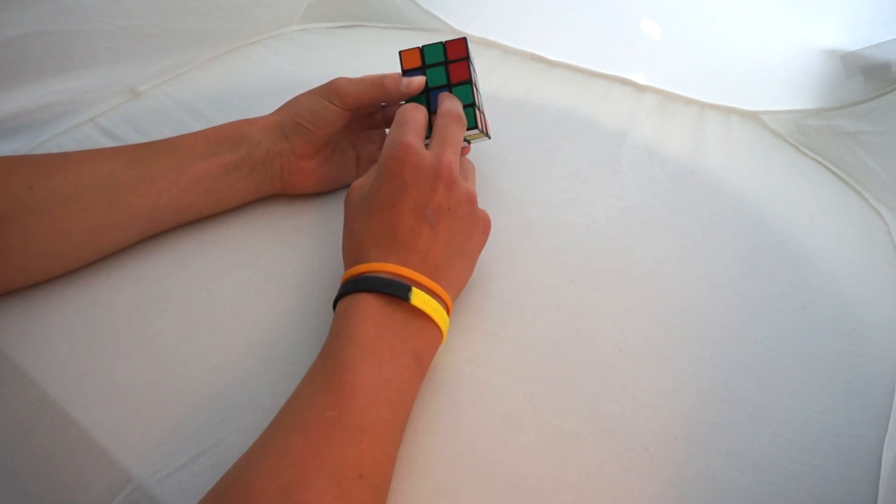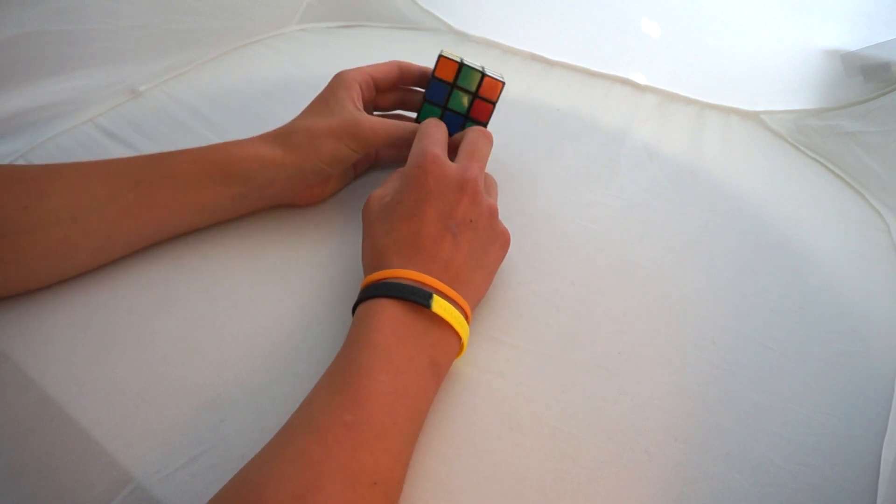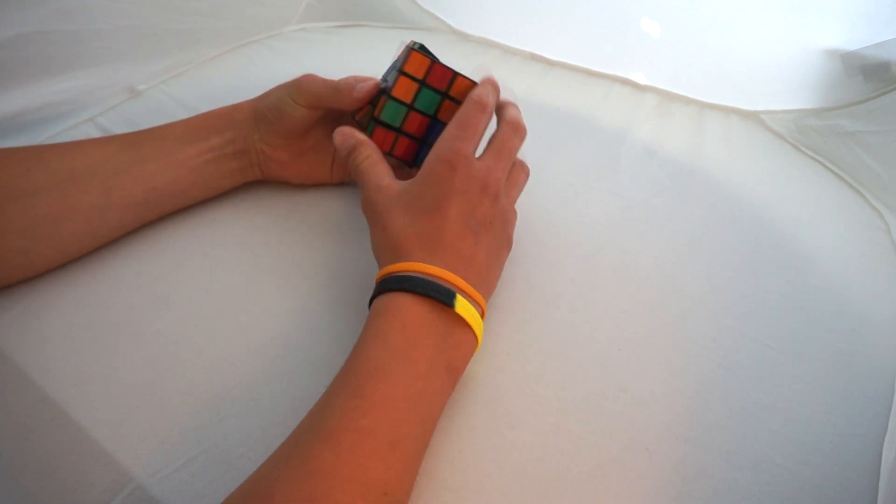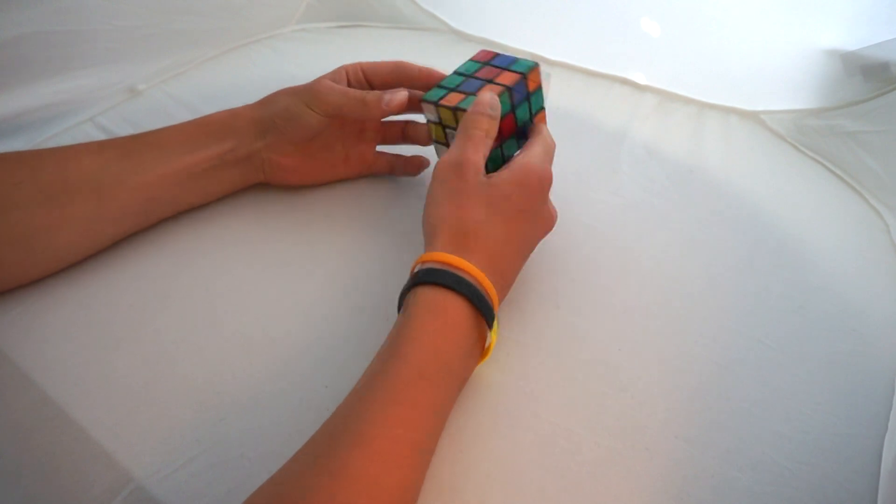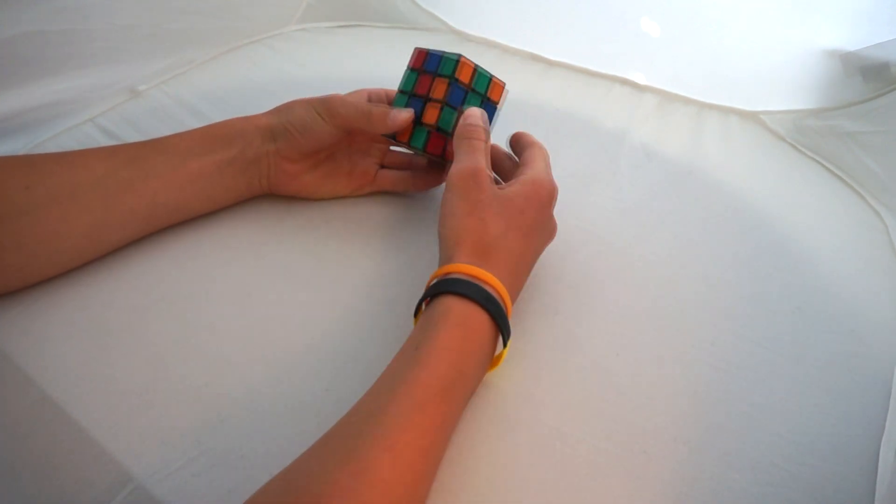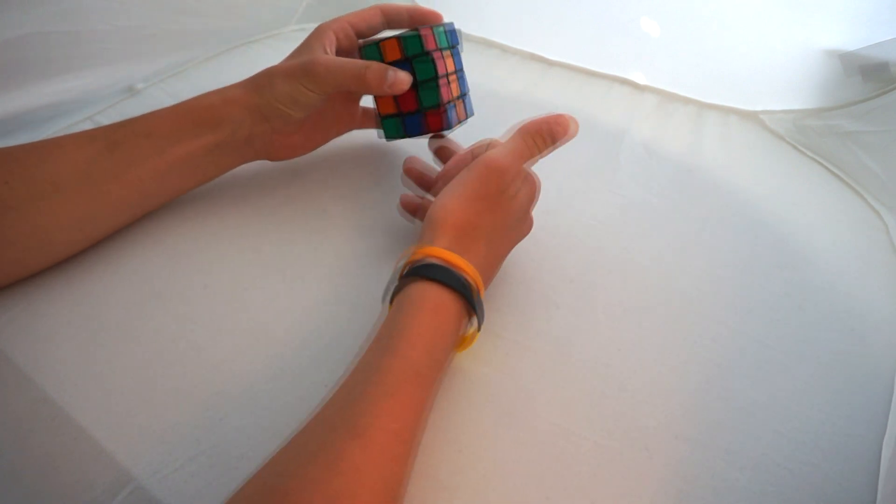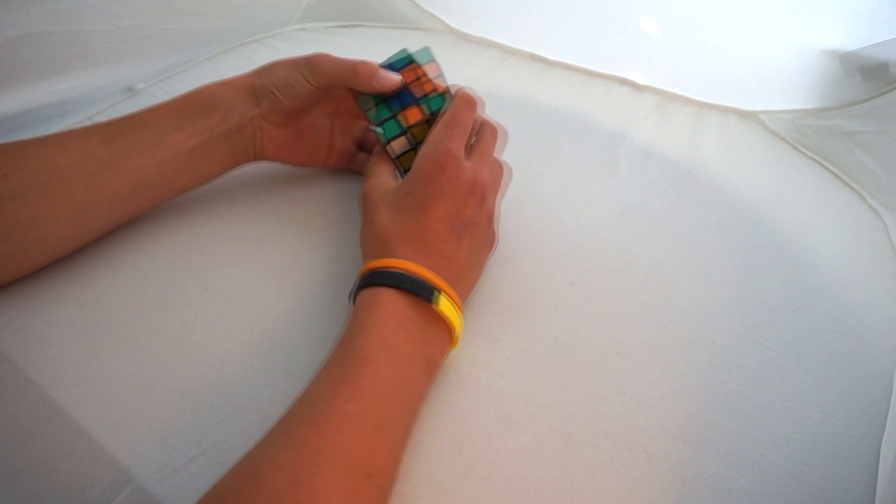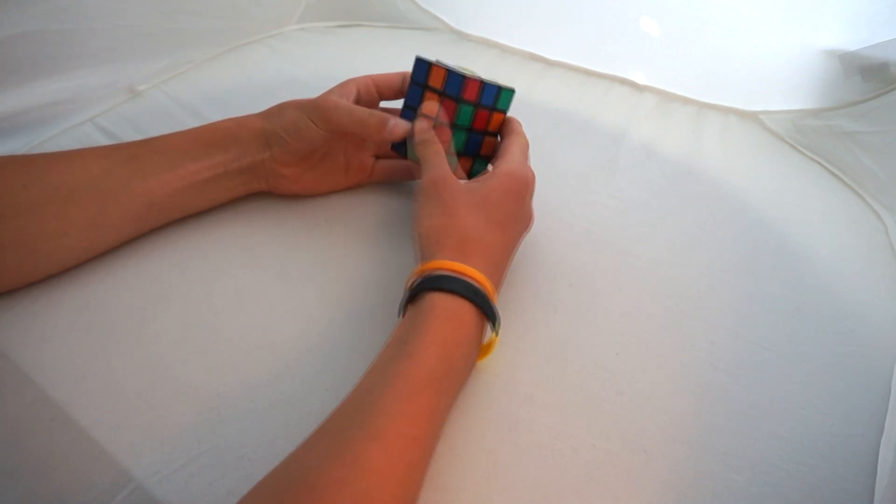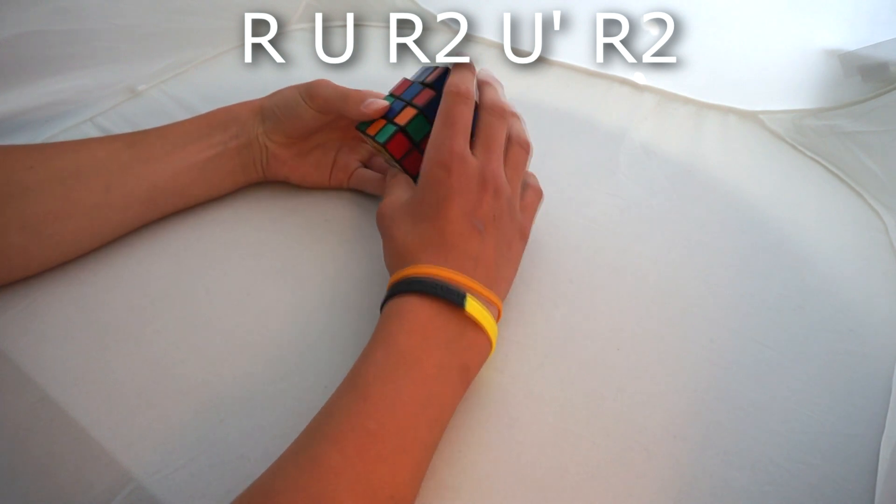I first orientate the colors on the edges: blue color first, then red, then green, and then orange which is already in there. This color scheme is for the white side. If you're like that, then you should have opposite. Okay, then I put in the edges. It's a simple algorithm that you apply a couple of times.